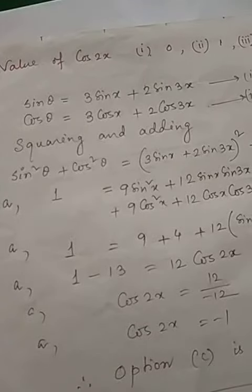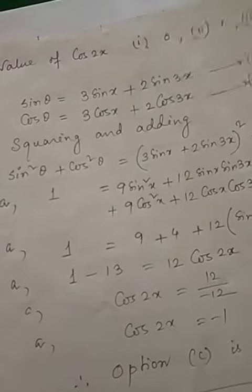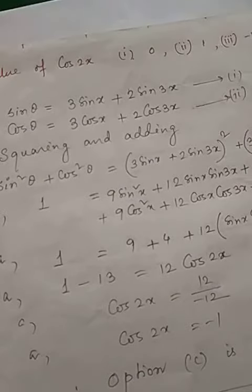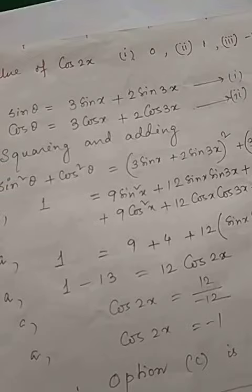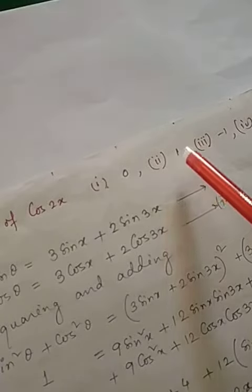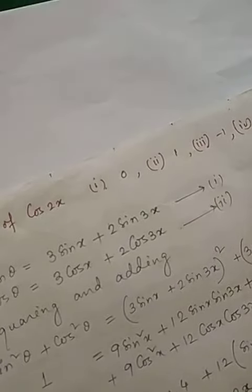This question is of Diploma Engineering Chapter Trigonometry. This is a request from your student. Find the value of cos2x. Options are 0, 1, minus 1, and 2.